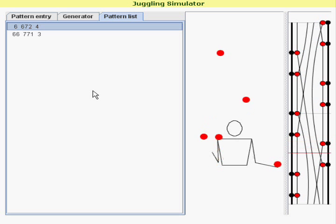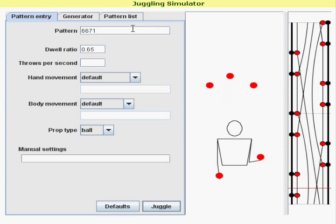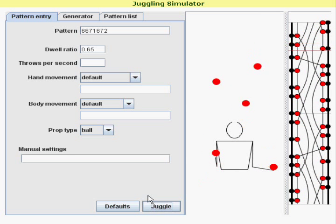In this case, the 672 happens to be in the same excited state. It's excited by a 6, just like the other pattern that we've already entered here. Because of that, we're allowed to slap on a 672 to the end of it, and the pattern is still juggable.